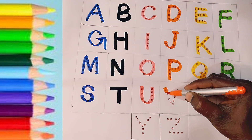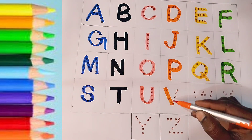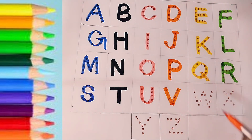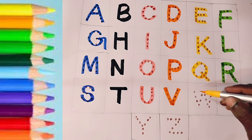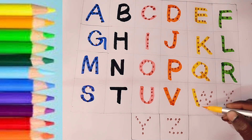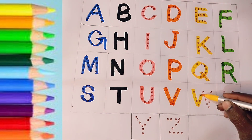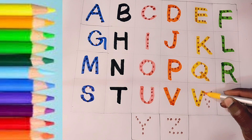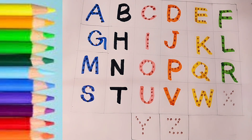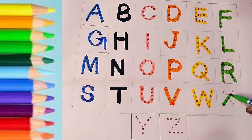Orange color. V for village. Yellow color. W for watch.